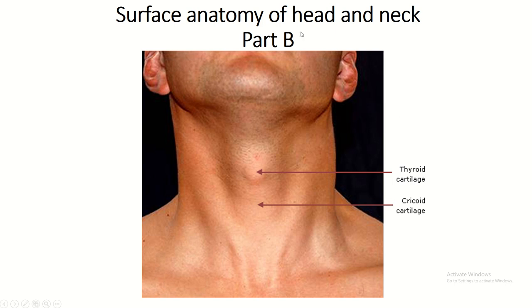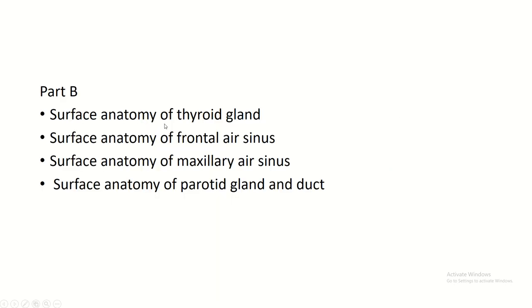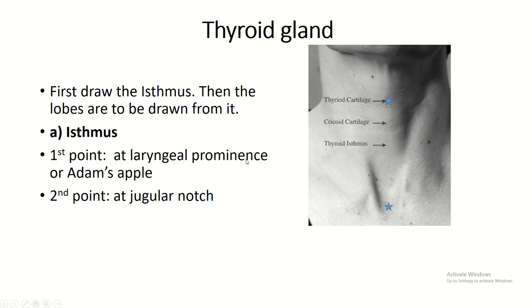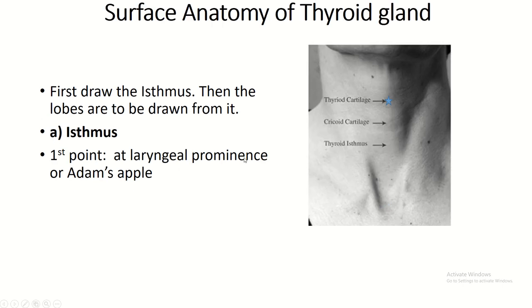Surface anatomy of the head and neck, part B. The following topics are discussed in this video. Surface anatomy of the thyroid gland. The thyroid gland has two lobes connected by an isthmus.